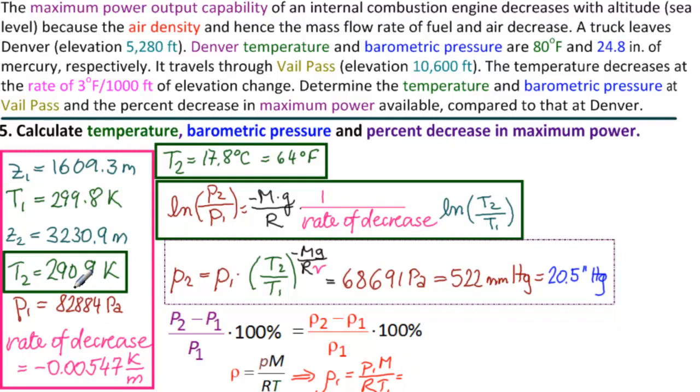So we substitute P1 and T1 M and R. 0.964 and Rho 2 equal to P2 M over R T2 which gives us 0.823. So substituting these two into this we would have 0.823 minus 0.964 that's negative notice over 0.964 times 100% which works out to minus 14.5%.